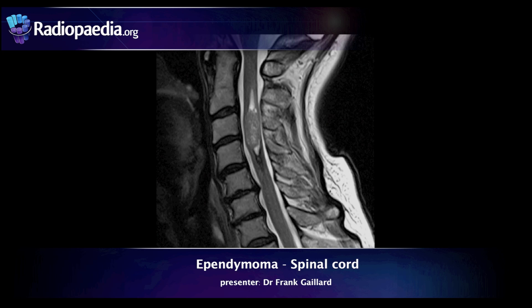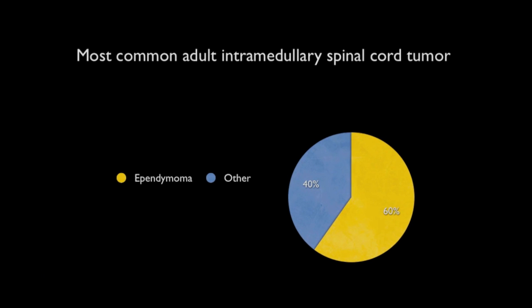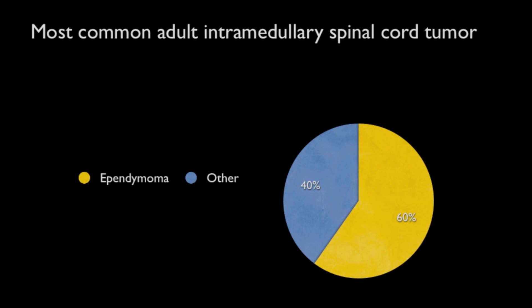This is Frank Gaylord from Radiopaedia.org and today we're going to look at spinal cord ependymomas. Ependymomas are the most common intramedullary tumour in adults, representing approximately 60% of all such tumours.